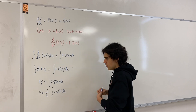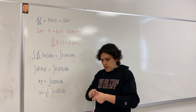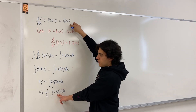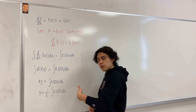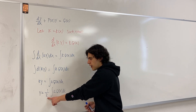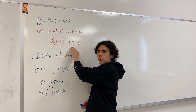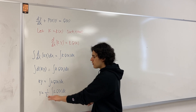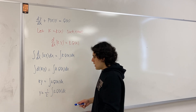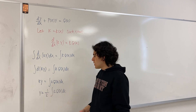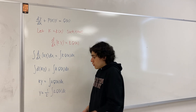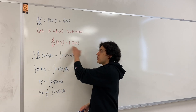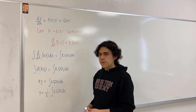Notice how useful this is. If you want to find y, the only thing you need is the function q — which is the right-hand side of the differential equation — times k, then you integrate that quantity and divide by k. The goal of finding a k such that this derivative property is true is so that we can make this equation work. The only thing we need to do to find y is to find k, because we already know q. And if we can find k, the integrating factor, such that this equation is true, then we can solve for y.